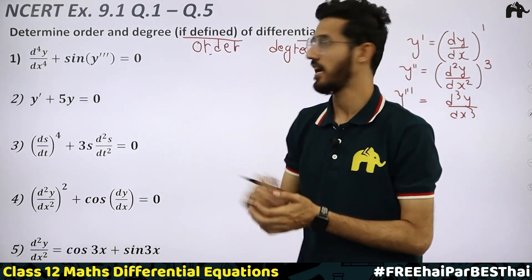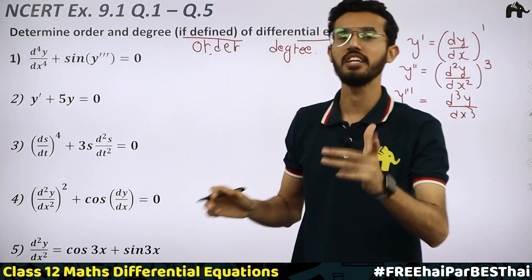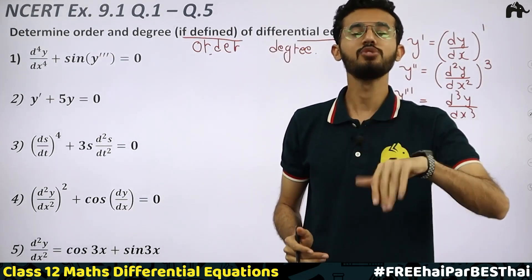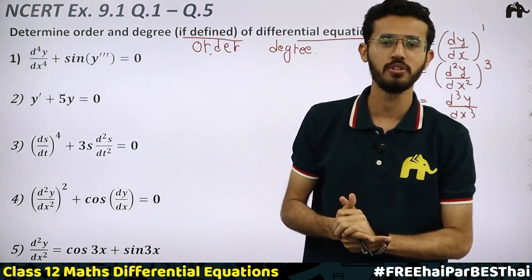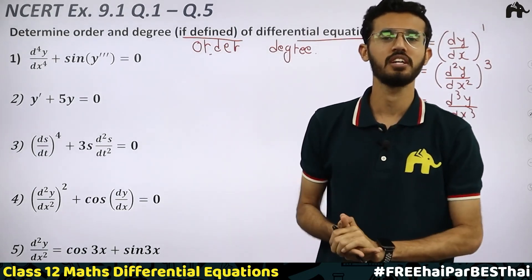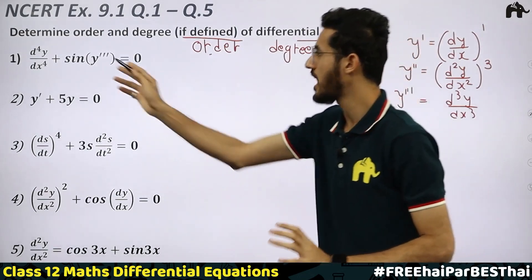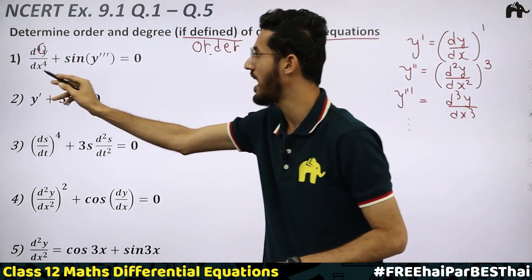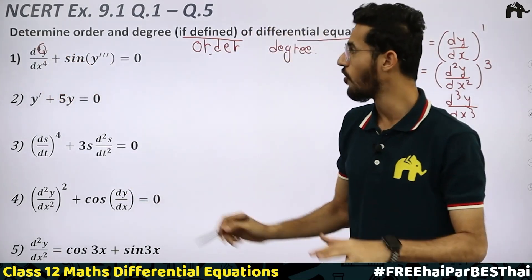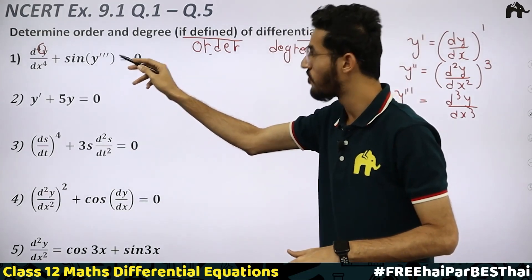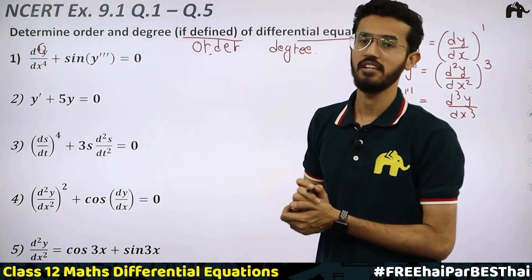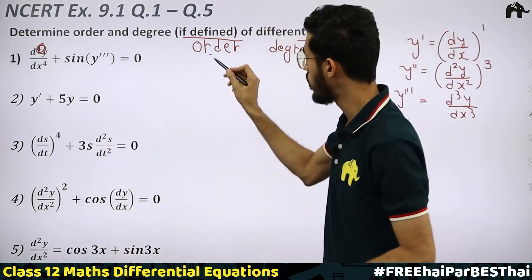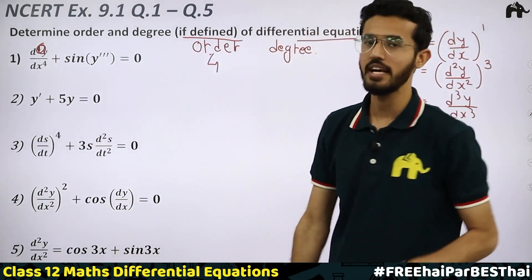So what does order mean here in a differential equation? The order is the highest order derivative. For example, in d⁴y/dx⁴ + sin(y‴) = 0, the highest derivative is 4, so the order of this differential equation is 4.